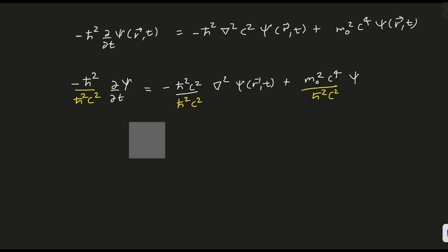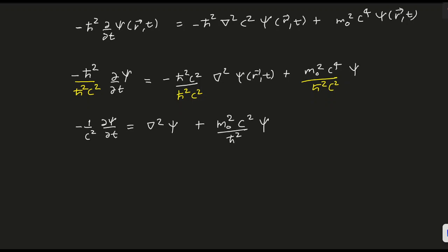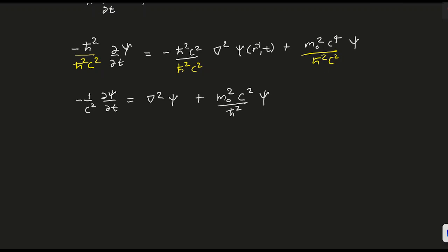Minus 1/C² del ψ/del t, these two will also get cancelled out, plus del² ψ plus M₀² C²/ℏ² times ψ. Now let's do some left side right hand side rearrangement.